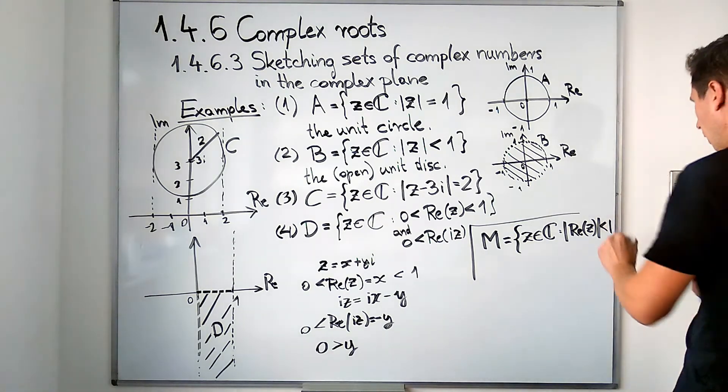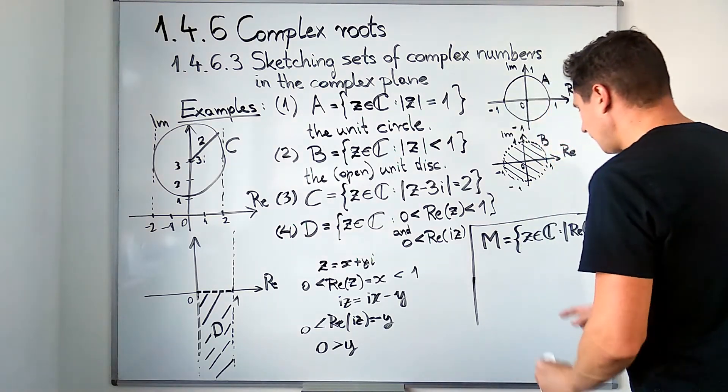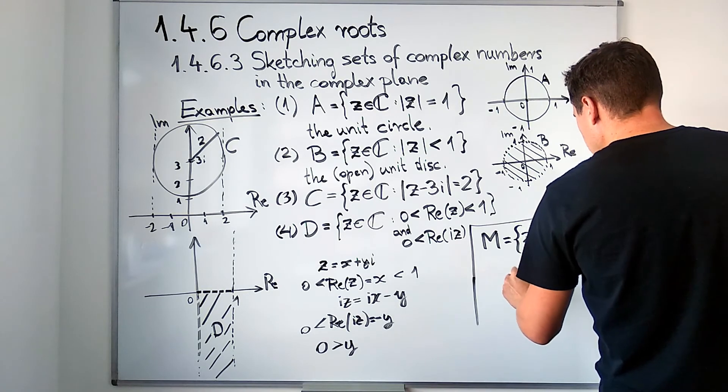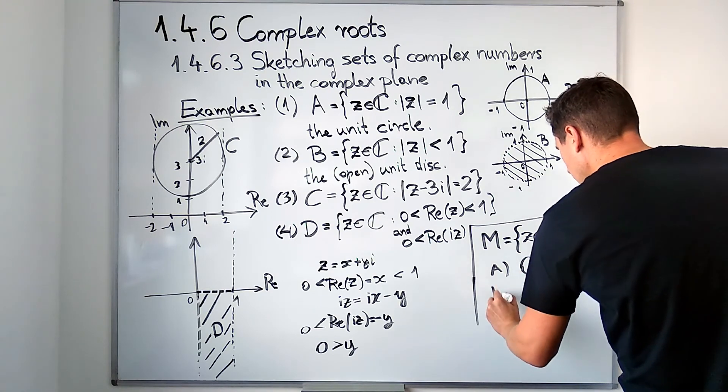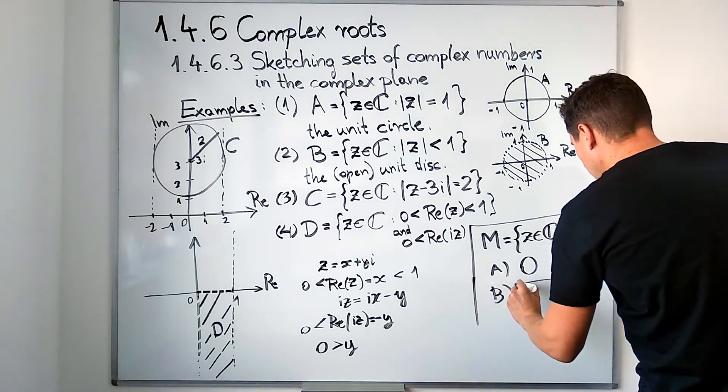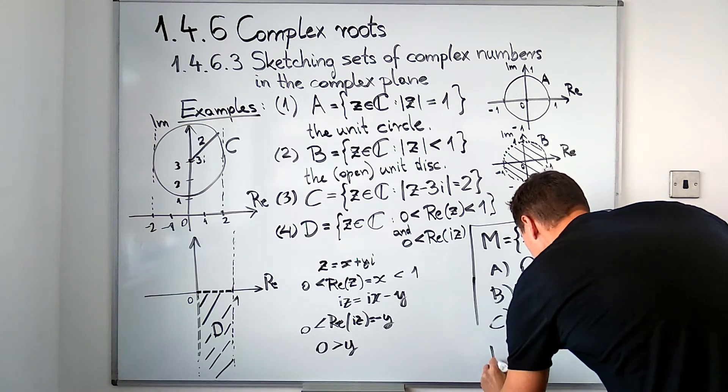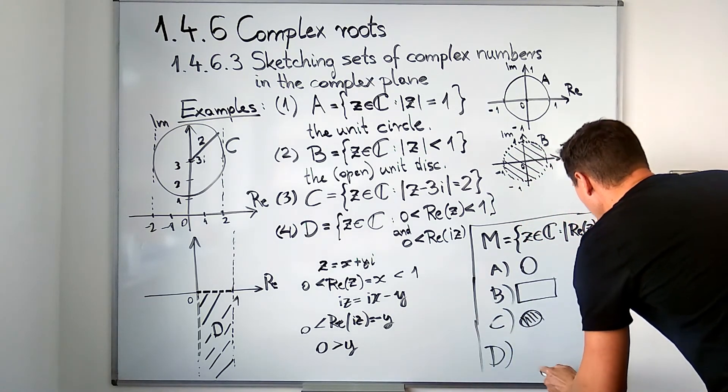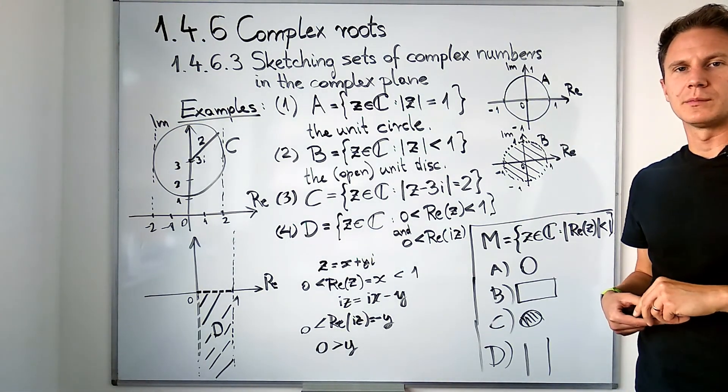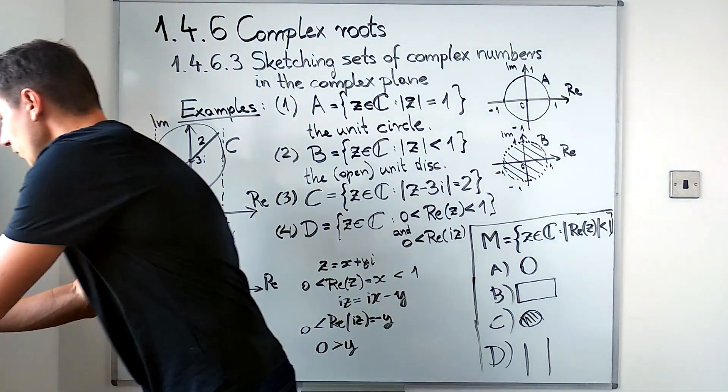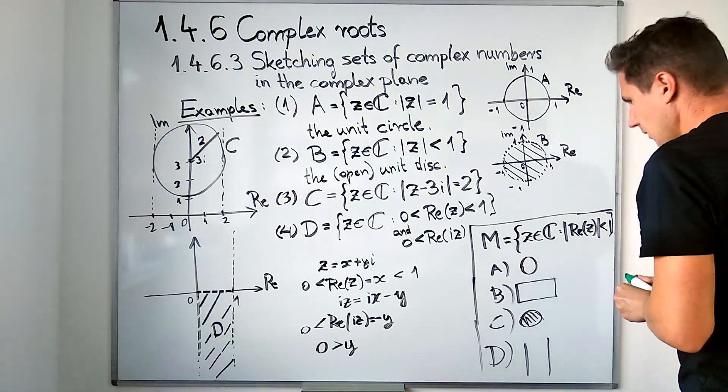M is a set of such complex numbers which have the real parts such that in absolute value they are less than one. I want you to pause the video, sketch out this set, and then tell me of these following options which one is true. Is it a circle, is it a rectangle, is this perhaps a disk, or is it some sort of infinite strip? So pause the video and select your answer below.